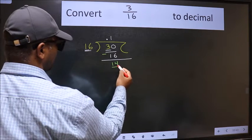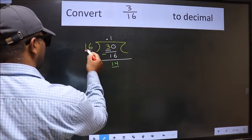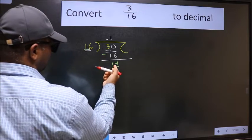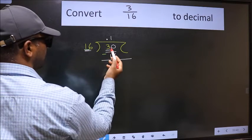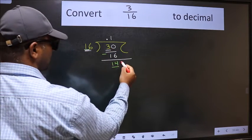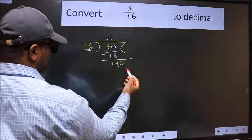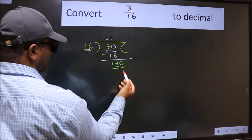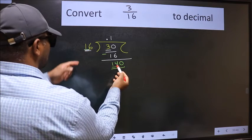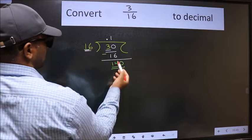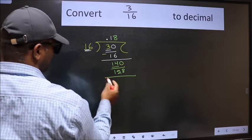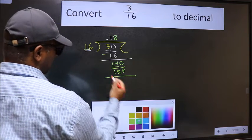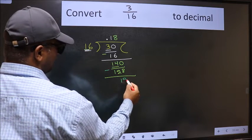Now here we have 14 and here 16. 14 is smaller than 16 and we already have the decimal. So we can directly take 0. Now 140. A number close to 140 in 16 table is 16 eights, 128. Now we should subtract. We get 12.